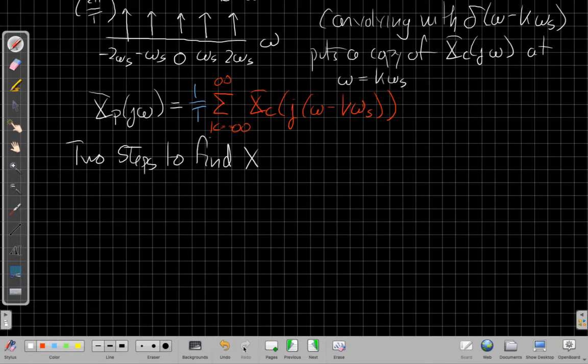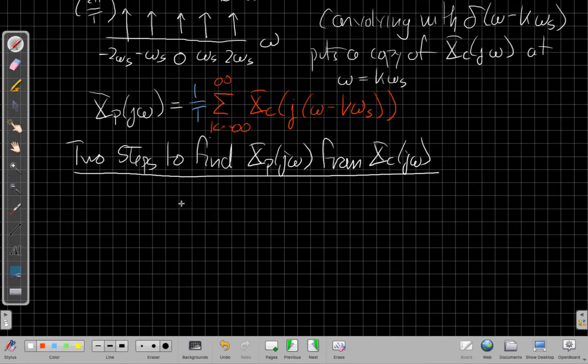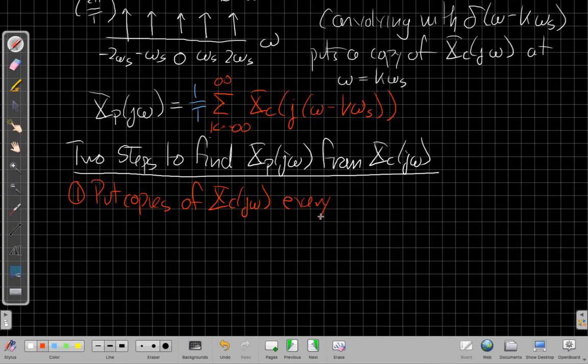J omega from X sub C. And I sort of color-coded them up above here. Which is to say that for step one, you put copies of XC of J omega every omega S, which is 2 pi over T. So every multiple, right, that's what this says, K times omega S.